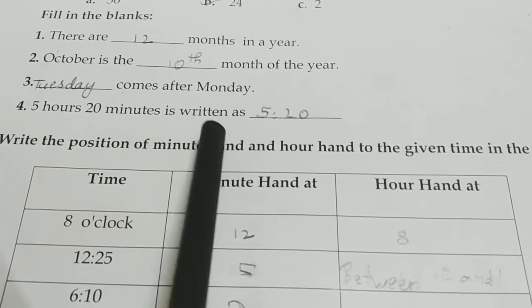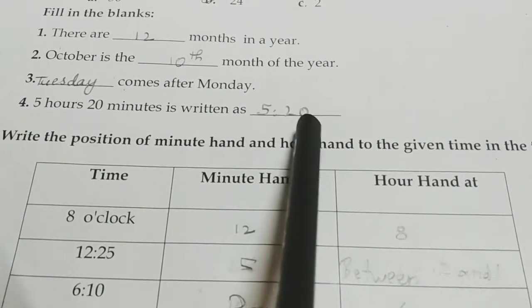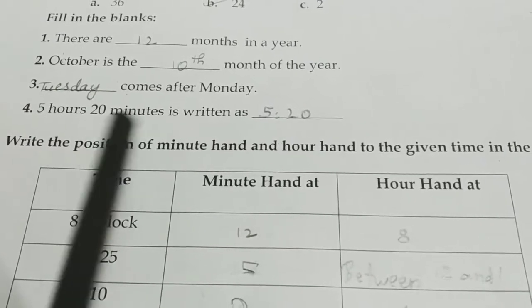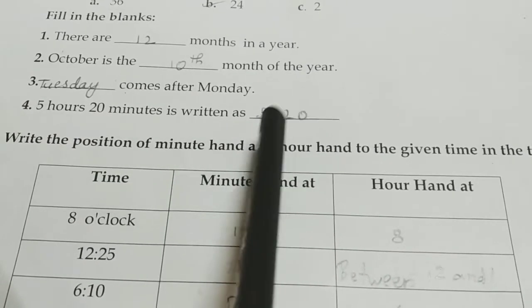5 hours, 20 minutes is written as 5.20. 5 hours, 20 minutes. 5.20.